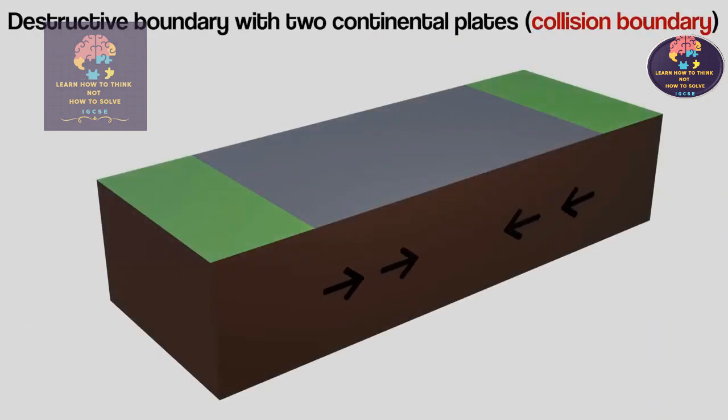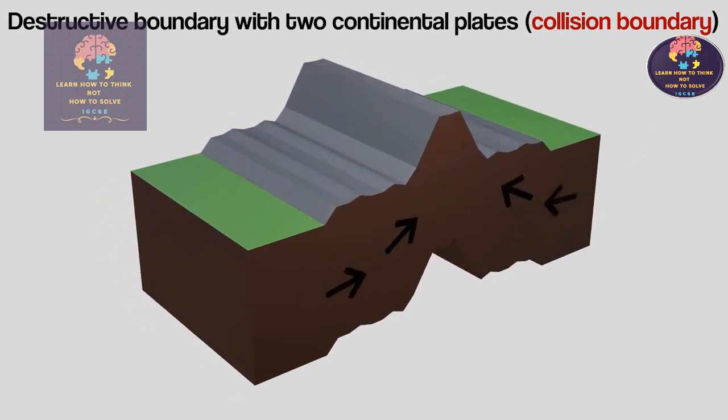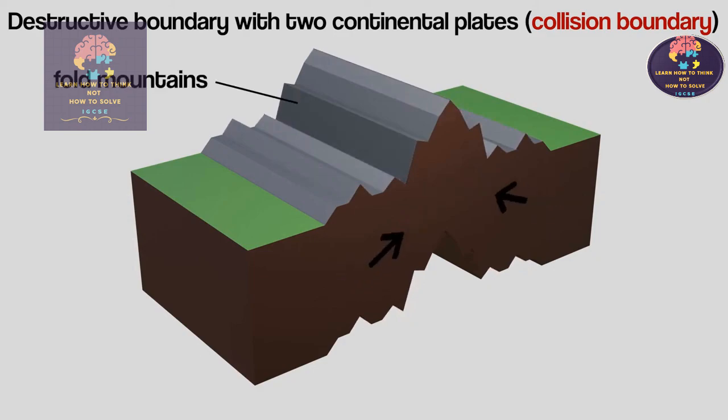The second type of destructive plate boundary is known as a collision boundary. The big difference here is that both of the tectonic plates are continental, so they have roughly the same density. They crash head on and crumple upwards, creating what we call fold mountains.